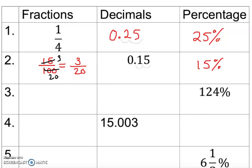The next one gives you the percentage. I don't see the decimal written under the percentage symbol, but there is a decimal after the number. You are going to move the decimal two places to the left — because when you have the percent symbol, you move it to the left or divide by 100. So we get 1.24.